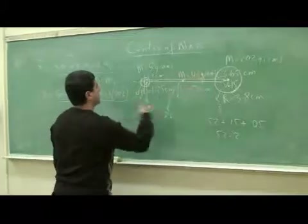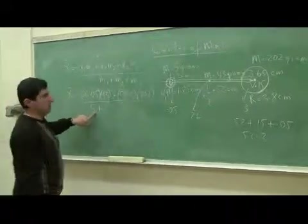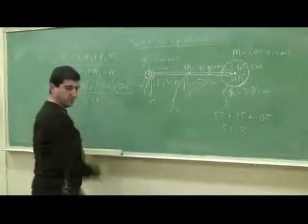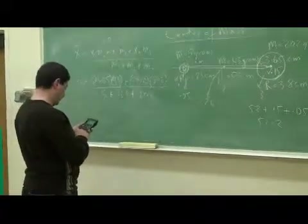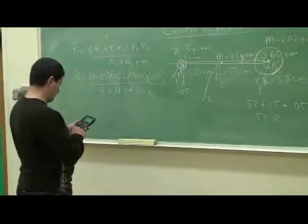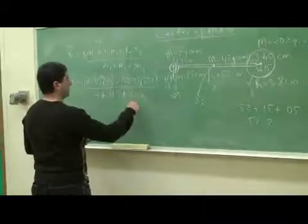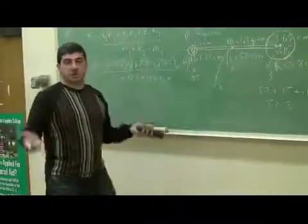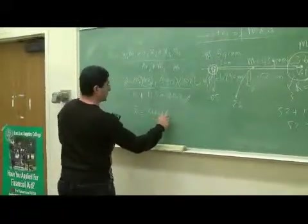Dividing by the total mass of the system: 5 plus 43 plus 202 grams. Notice that the mass of the small sphere appears only in the denominator, not the numerator since x1 was zero. The grams cancel, so the final answer is in centimeters. Calculating: 26.05 times 43, plus 52.2 times 202, divided by 250, gives 46.66 centimeters.